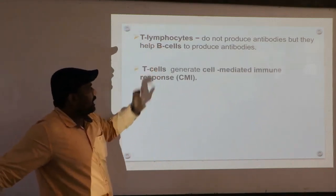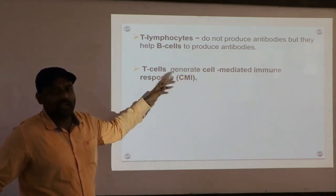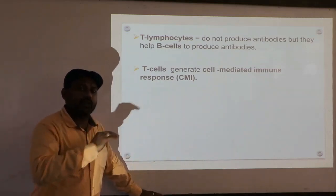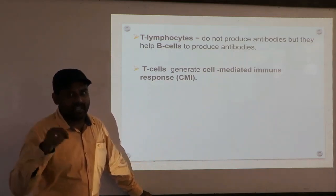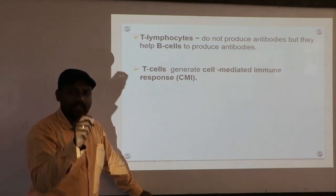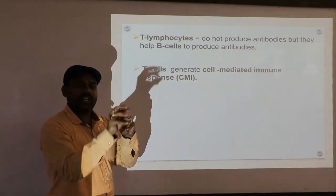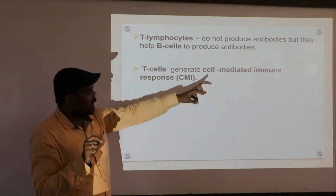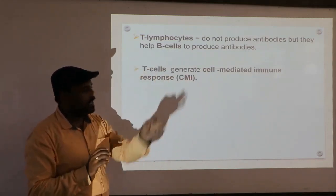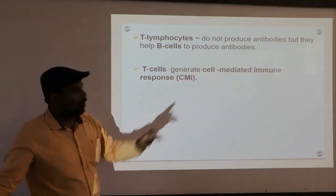This is a very important role of T-lymphocytes. T-cells generate cell-mediated immunity, or CMI. In antibody-mediated immunity, B-lymphocytes kill the antigen indirectly by producing antibodies. In contrast, in cell-mediated immunity, the T-cell directly goes near the antigen and kills it. Hence it is called cell-mediated immunity — the word 'cell' refers to T-lymphocytes. So immunity is brought about directly by T-cells themselves.